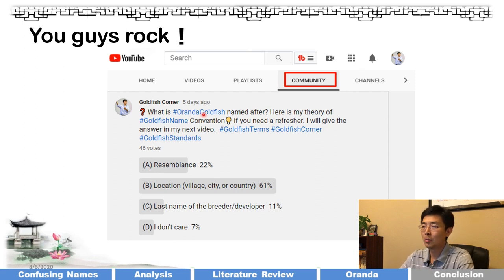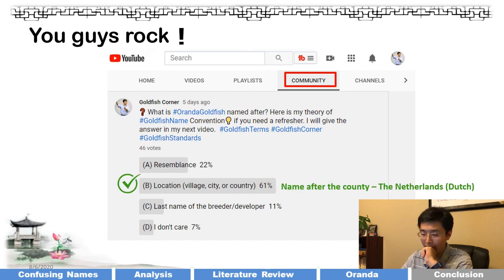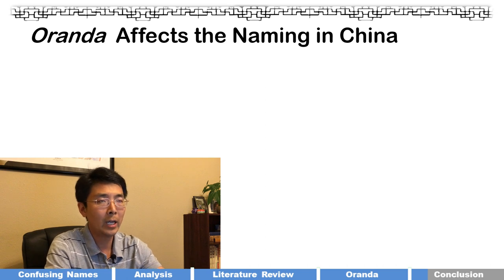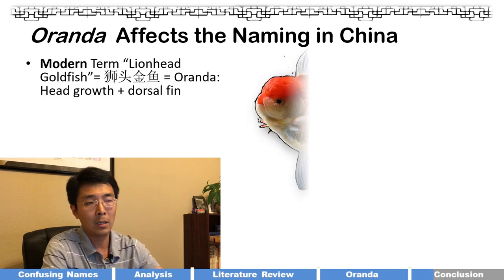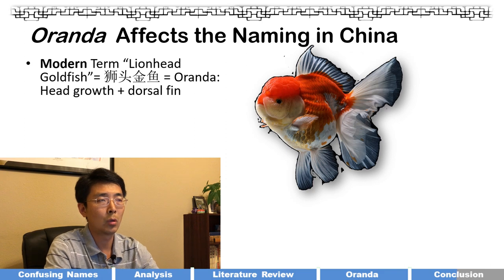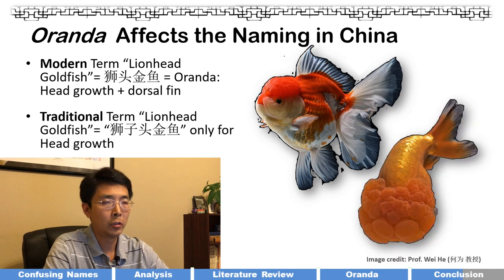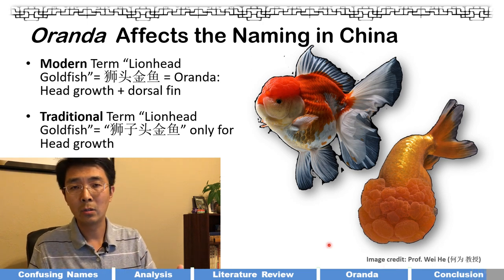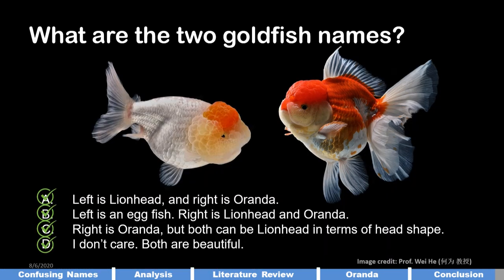I posted a question on my YouTube community asking what the oranda goldfish was named after. The correct answer is B — it was named after a country: the Netherlands (the Dutch). Now we can see how this 'oranda' concept affected naming in China. Eventually this concept came back to China, and in modern usage 'lionhead' in China literally means oranda — head growth with a dorsal fin. The traditional term 'shizitou' referred only to head growth regardless of whether the fish had a dorsal fin.